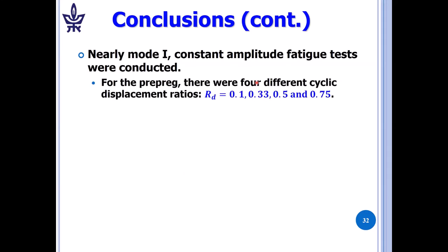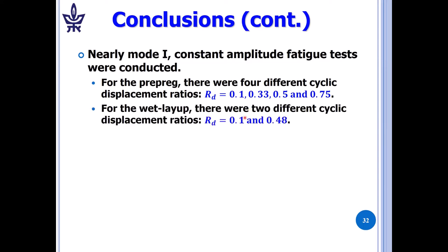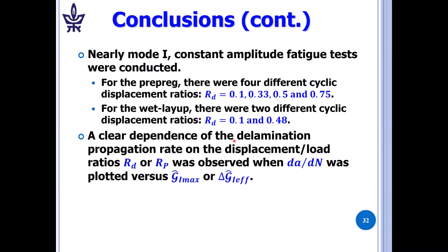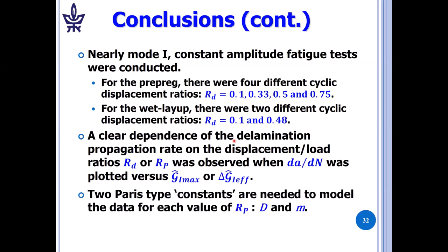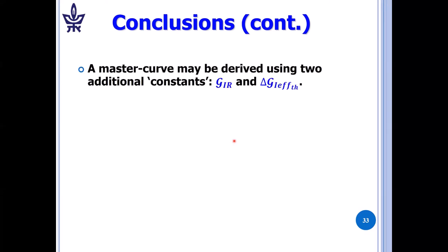Nearly mode one constant amplitude fatigue tests were conducted. For the prepreg, we had four cyclic ratios, 0.1, 0.33, 0.5, and 0.75. For the wet layup, there were two different cyclic ratios, 0.1 and 0.48. A clear dependence of the delamination propagation rate on the displacement or load ratios, RP or RD or RP, was observed when da/dN was plotted versus G1max or delta G1 effective. Two Paris-type constants are needed to model the data for each value of RP, these being D and M in the equations we showed. We were able to get a master curve and we needed to have two more constants. One was G1R and the other was delta G1 effective threshold.